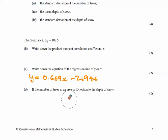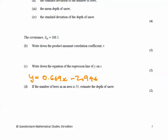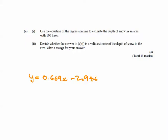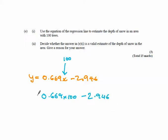The next question says: use the equation of the regression line to estimate the depth of snow in an area with 100 trees. So we put 100 in: y = 0.669 × 100 − 2.946 = 63.95, which roughly equals 64 centimetres. That would be your answer.